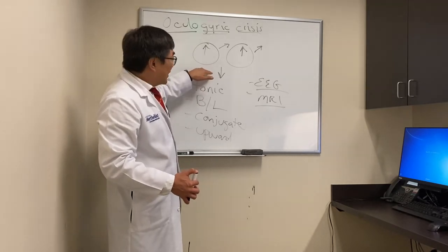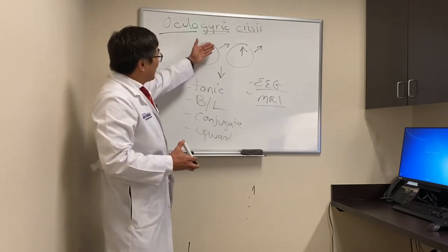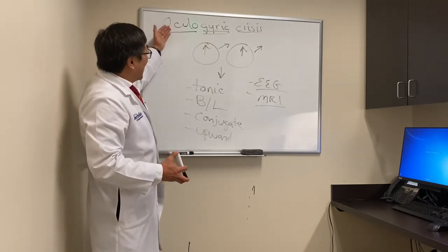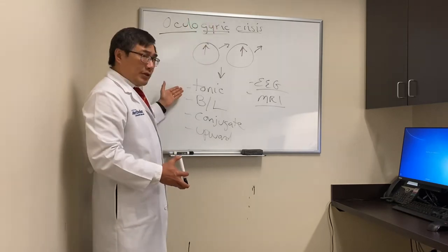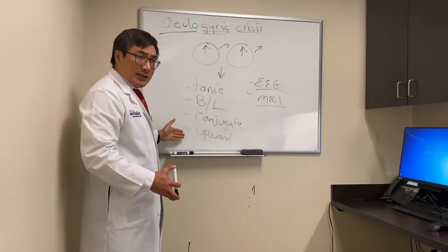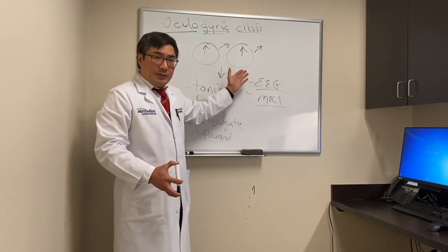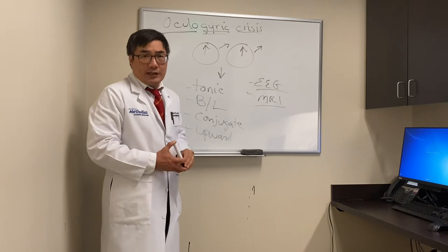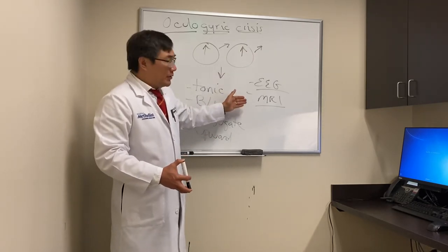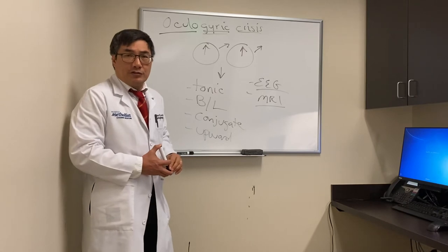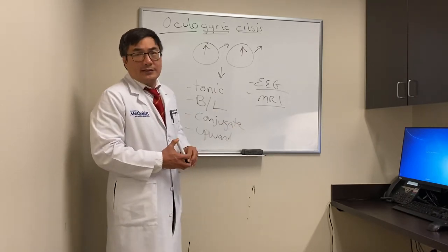So, oculogyric crisis: the eyes gyrate and turn upward acutely — it's tonic, bilateral, conjugate, and involuntary. Patients may or may not have other symptoms and signs. It's a dystonic reaction to medicines. Do an EEG to make sure it's not a seizure, and do an MRI scan to make sure there's no structural lesion. Ophthalmologists need to know about it and the medicine lists that can cause it.